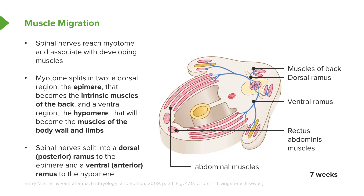As these muscle masses are migrating, they pull their nerve supply behind them, and so the nerves are getting stretched away from the spinal cord as the upper and lower limbs are developing. Those nerves get pulled behind, making the brachial plexus in the upper limb and the lumbosacral plexus in the lower limb.